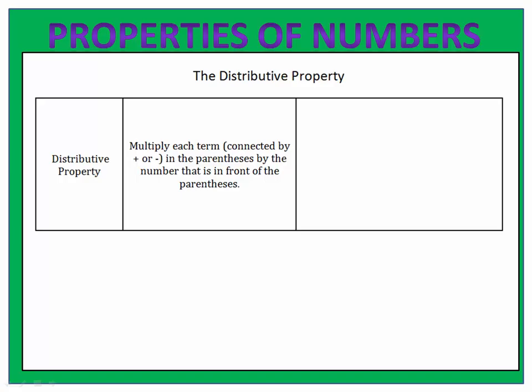Finally, everyone's favorite property: the distributive property. The distributive property is when you have a number out in front of a set of parentheses and then a polynomial inside. We distribute that negative five by multiplying each of the terms inside by negative five. That gives us negative five x minus ten.